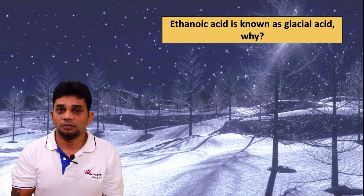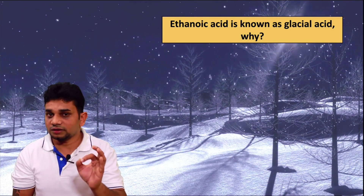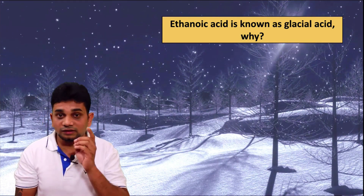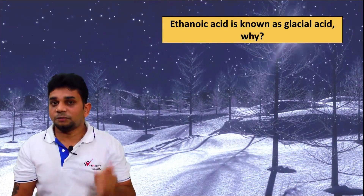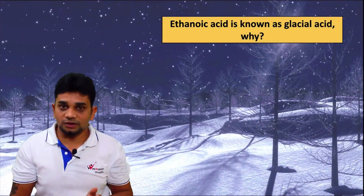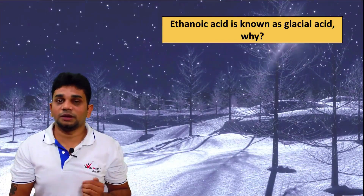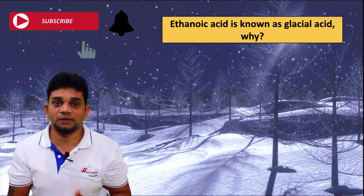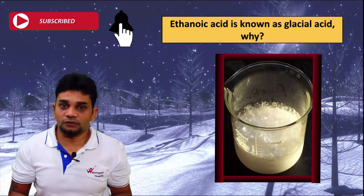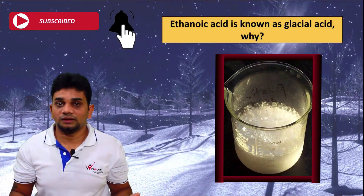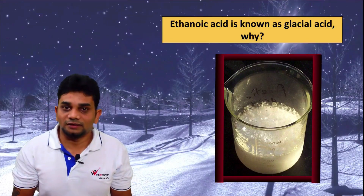Just imagine it is winter season. The temperature might be 3°C or 5°C — which is below 390 Kelvin, the freezing point of ethanoic acid. If the temperature is below or equal to 390 Kelvin, the acetic acid will convert into solid form — it freezes.